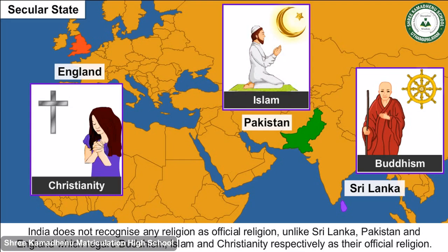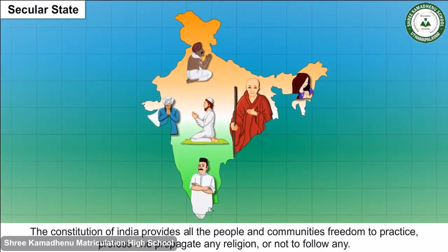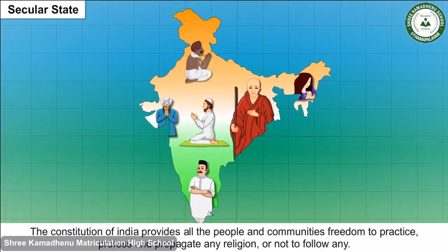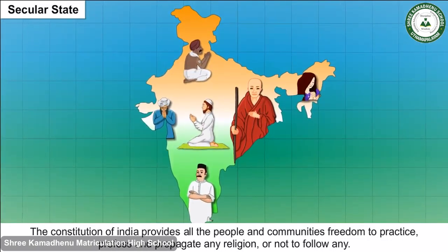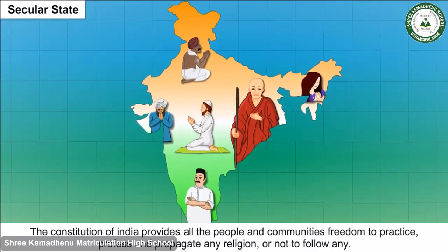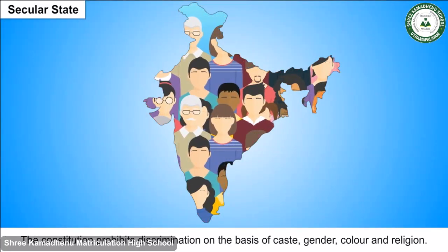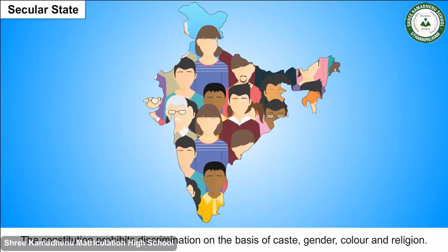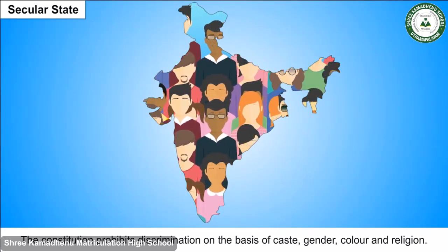Unlike Sri Lanka, Pakistan and England, which regard Buddhism, Islam and Christianity respectively as their official religions, the Constitution of India provides all people and communities the freedom to practice, profess and propagate any religion. The constitution prohibits discrimination on the basis of caste, gender, colour and religion, and allows intervention to address caste inequalities.